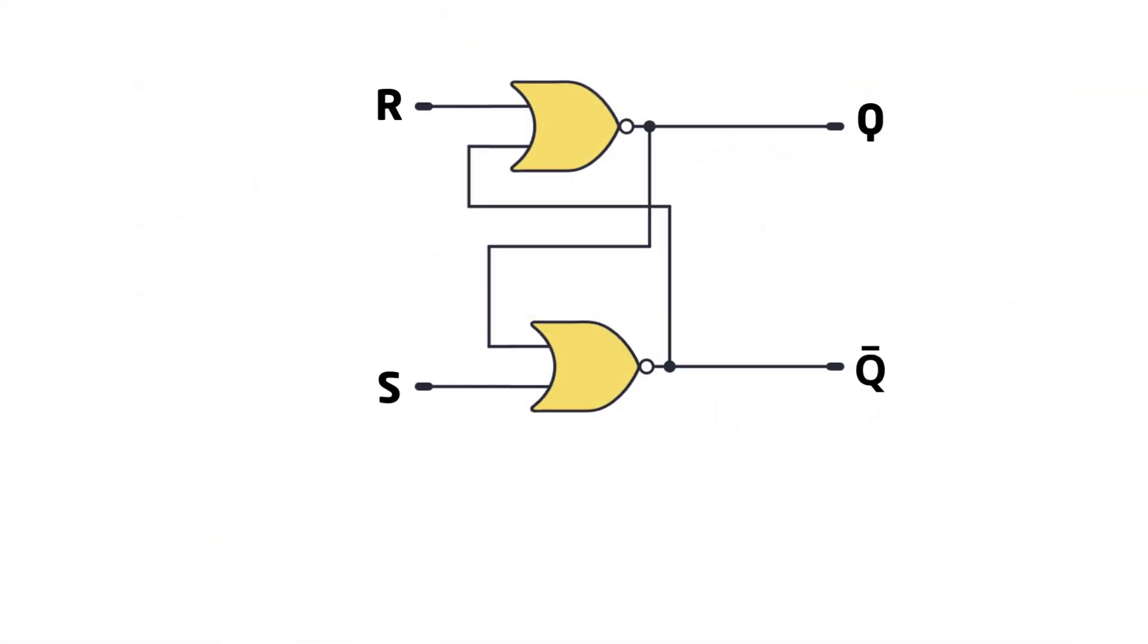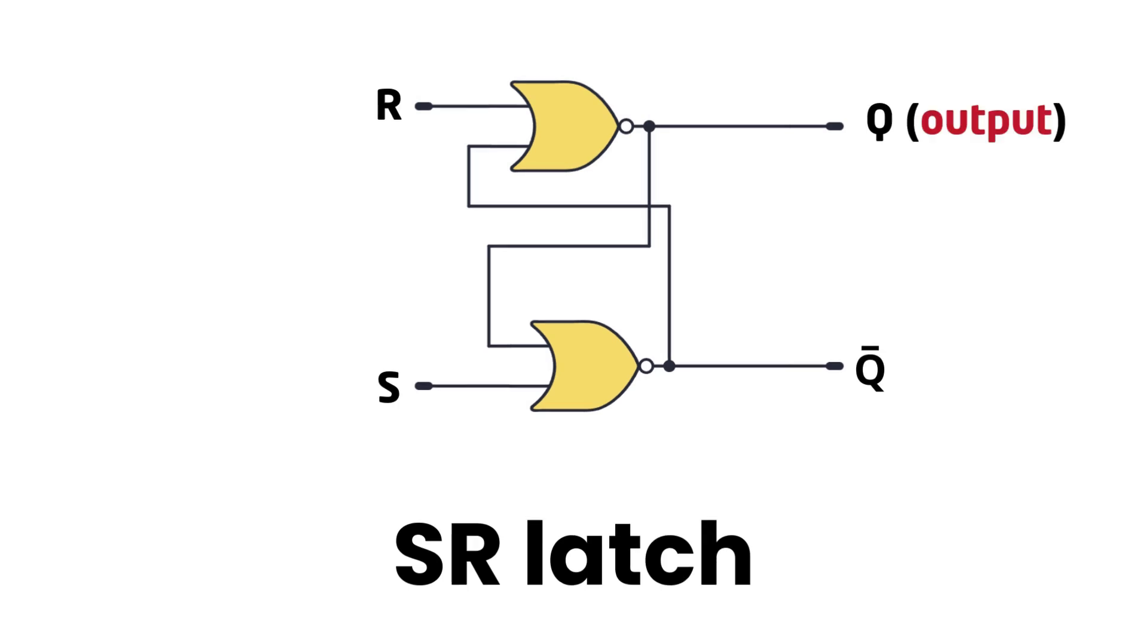If we take two NOR gates and connect them as shown here, we have an SR latch. This type of circuit is called a sequential circuit because the output of the circuit now depends not only on current input, but also on previous output or the previous state. In this SR latch, each NOR gate's output depends on the output of the other NOR gate. Let us look at how this feedback mechanism allows the circuit to remember its state.